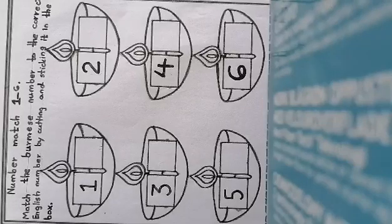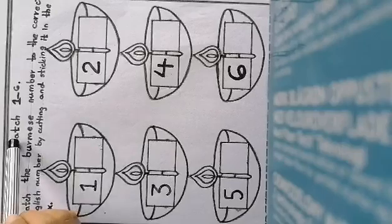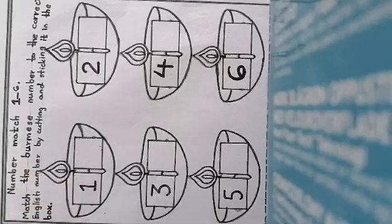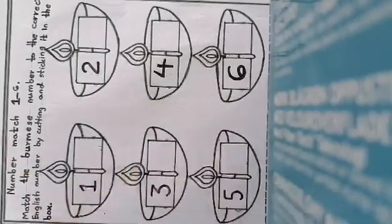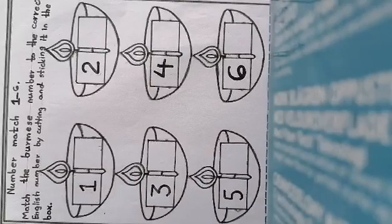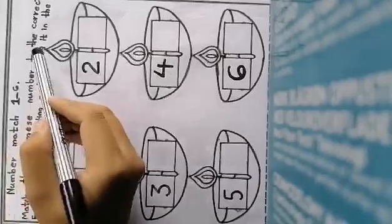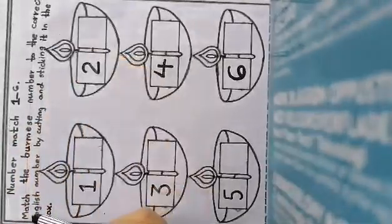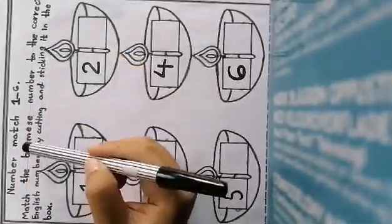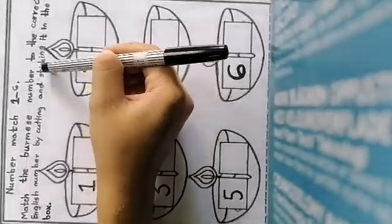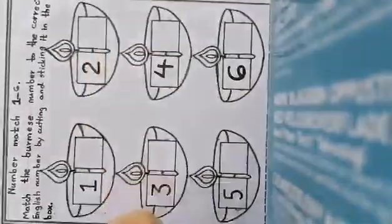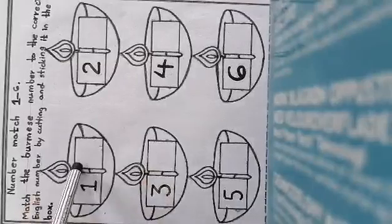Wow, what is that? Oh, number match 1, 2, 6. Oh, what is that? Match the bonus number to the correct English number by cutting and sticking it in the box. Oh, did you see box? Yeah.